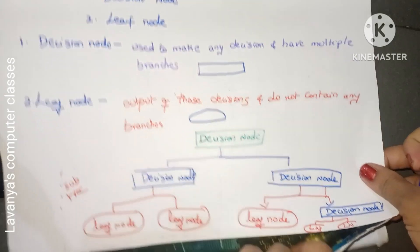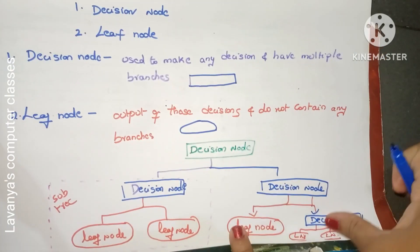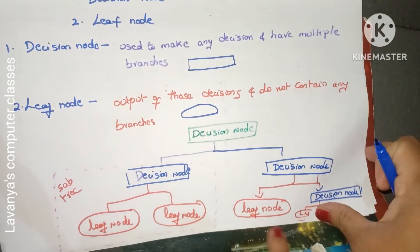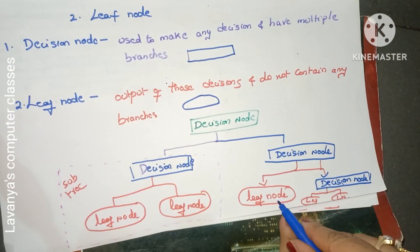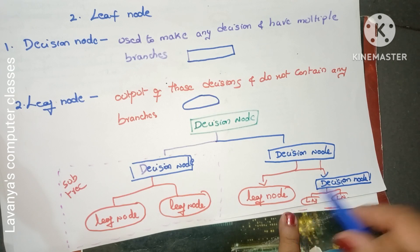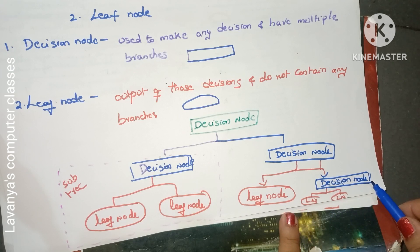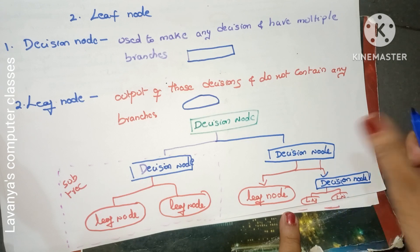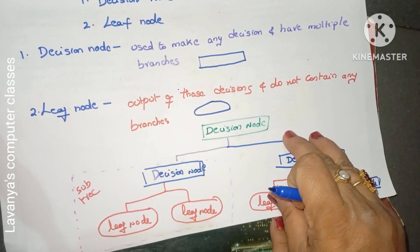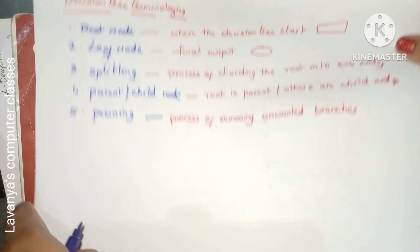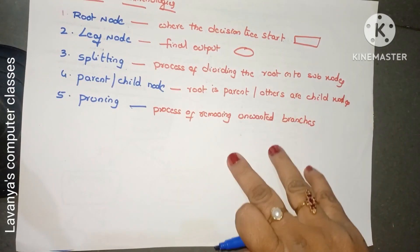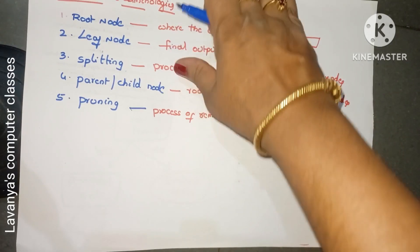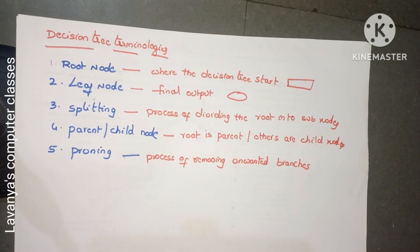Similarly, here also there is a decision node. Depending on the decision node, it may be a leaf node — the final output — or you may need to take one more decision, in which case that decision node contains further leaf nodes. This is the basic diagram of decision trees. Now I will explain the decision tree terminologies.